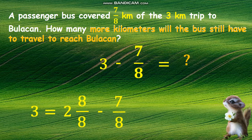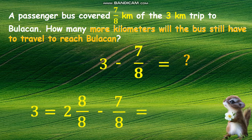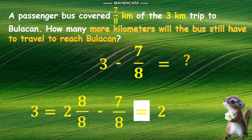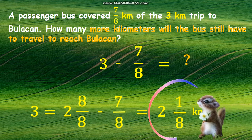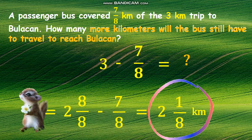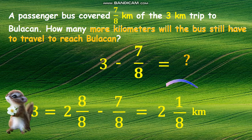We can now subtract two and eight-eighths minus seven-eighths. Start with two minus zero, or copy two. Subtract the numerator eight minus seven equals one, and copy the common denominator. The correct answer is two and one-eighth more kilometers the bus will still have to travel to reach Bulacan.